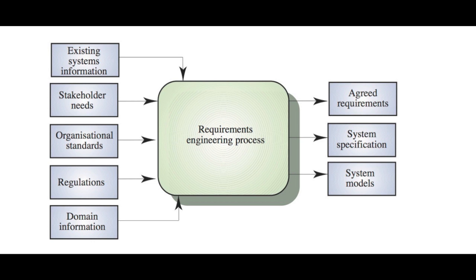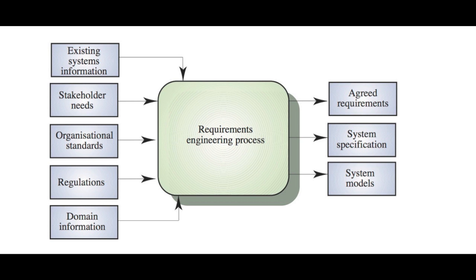The inputs to the process are not just from the system stakeholders — not just their needs — but also information about existing systems, organizational standards and other documents, regulations, and information about the domain in which the system is going to be developed. Engineers have to assimilate all of that information and work with the stakeholders to generate the process outputs, which may be a set of agreed requirements, a high-level description of what the system should do, and sometimes a much more detailed system specification. For critical systems we need a more detailed reflection of the requirements, not simply broad, vague statements of what we would expect from the system.